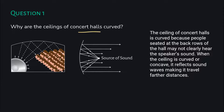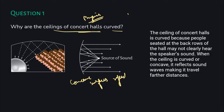Why are the ceilings of concert halls curved? The ceiling of concert halls are curved because people seated at the back rows of the hall may not clearly hear the speaker's sound. Concave surfaces reflect sound, so the ceiling is made curved so that the sound is reflected towards viewers sitting at the back, allowing them to also hear the sound clearly.